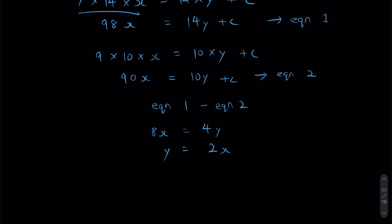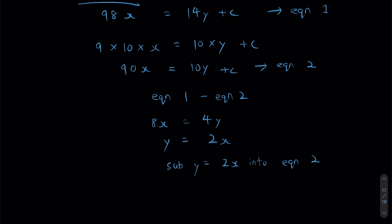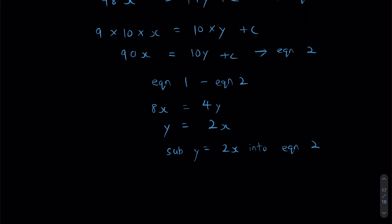I'm now going to sub Y equals to 2X into equation two. The reason I want to do this, I have now expressed Y in terms of X. I also want to be expressing C in terms of X. So equation two, I have 90X is going to be equal to 20X, since I've done the substitution, plus C.